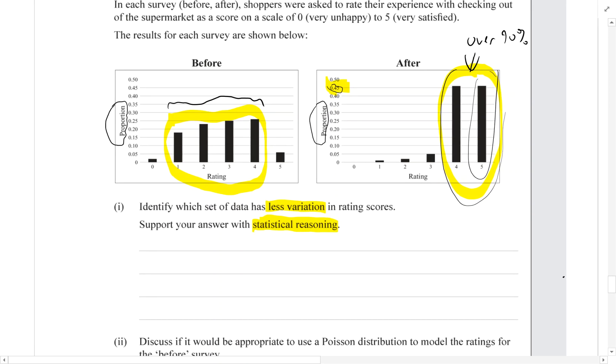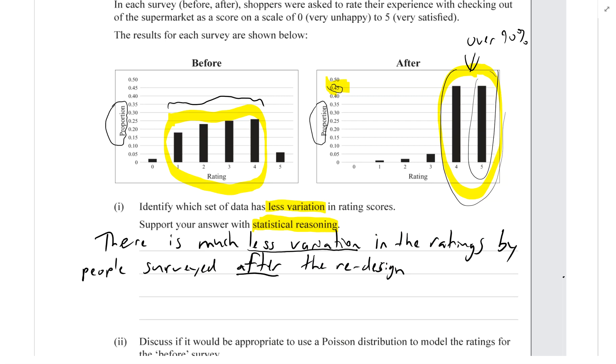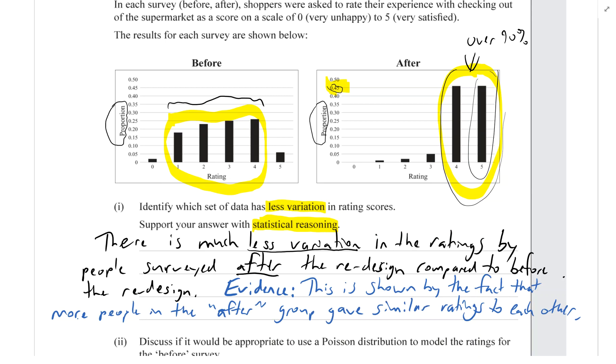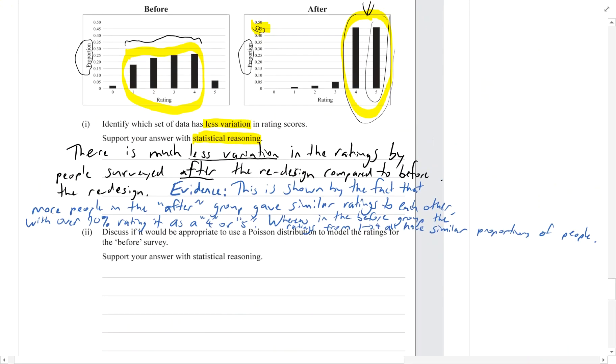So let's write that down. Which group had less variation? There is much less variation in the ratings by people surveyed after the redesign compared to before the redesign. The evidence for that - evidence means we're referring to the features of the graph and usually referring to numbers as well - this is shown by the fact that more people in the after group gave similar ratings to each other, with over 90 percent rating it as four or five. Whereas in the before group, the ratings from one through to four all have reasonably high proportions. So I've backed it up with numbers as well.